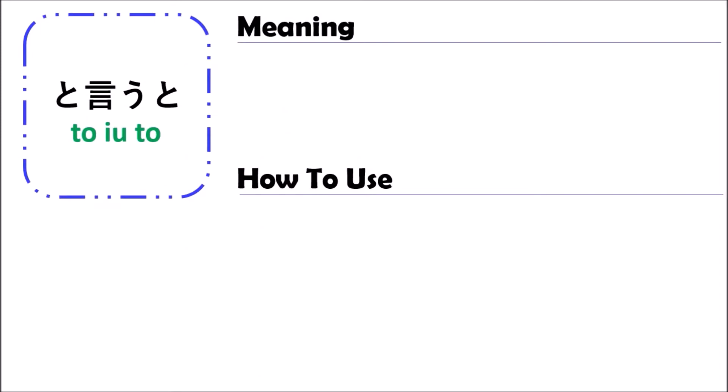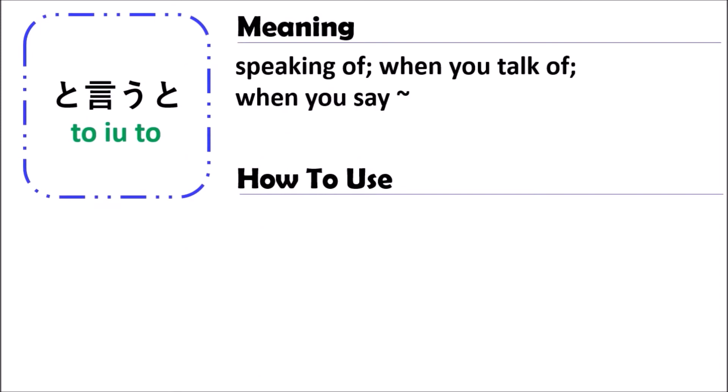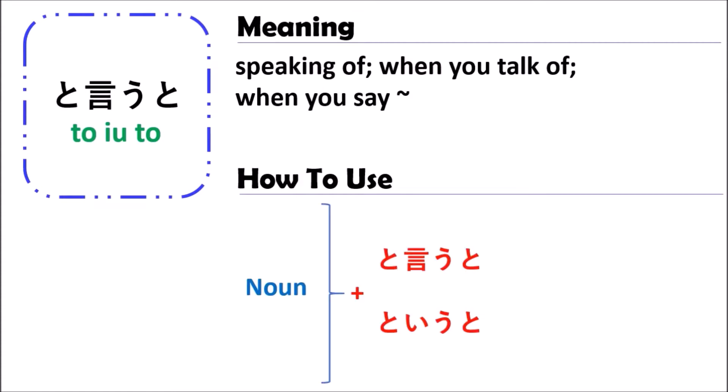Speaking of the grammar point と言うと (to yuto), in Japanese you can use this grammar with a noun only. That means you should begin with the noun, and after that follow it with と言うと. You can write it in kanji or in hiragana — see here the first one is written in kanji.